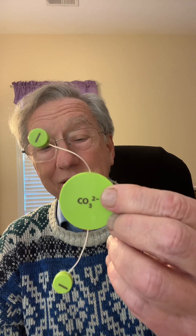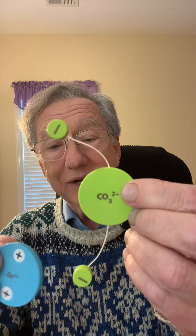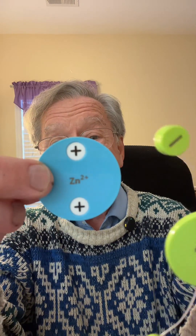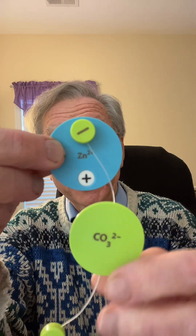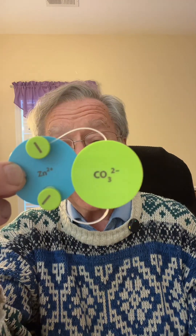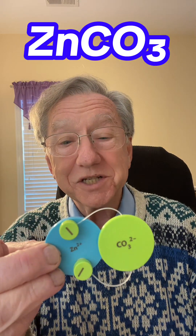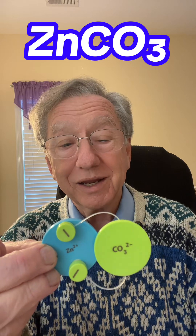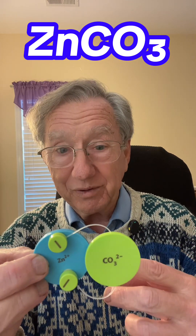Look at this. I have a zinc and I have a carbonate, minus two, and this has got two pluses. And guess what? They stick together and you have zinc carbonate. Every plus has to be covered by a minus. Pluses and minuses have to add up to zero.